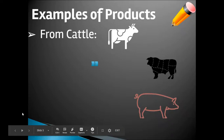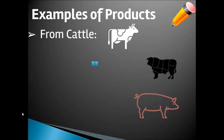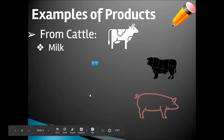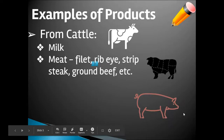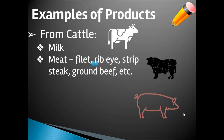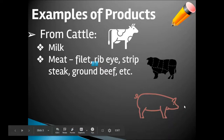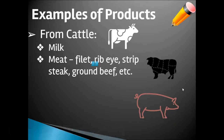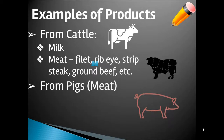From cattle, we have an example of a product being milk. Milk would come from a type of cattle called dairy cattle, which we often refer to as cows. Also from cattle, we get meat, such as filet, ribeye, strip steak, ground beef, etc. All of these are products — the main purpose for which we might harvest or slaughter an animal.